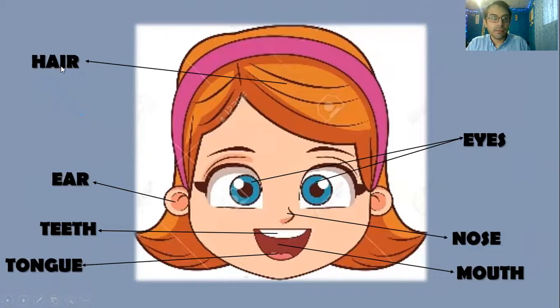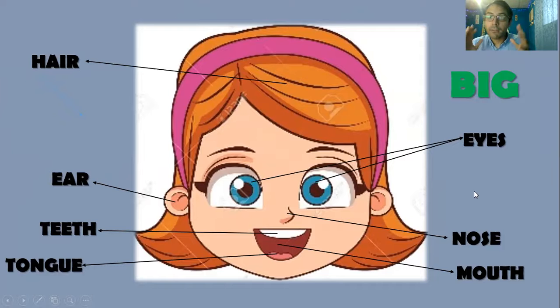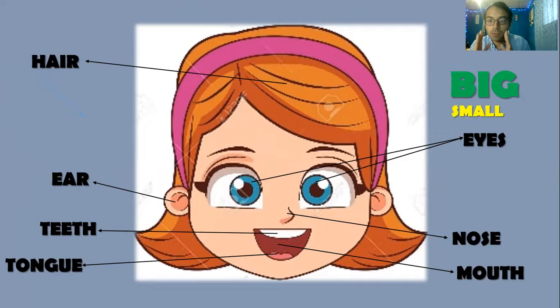Entonces acuérdense, las partes del cuerpo son: the hair, el cabello; the eyes, los ojos; the ear or ears; the nose; the teeth; the tongue; and the mouth, la boca. Esas serían todas las partes. Y recuerden, podemos describirlos diciendo que son big, grandes, o small, pequeños. Primero decimos el tamaño y después la parte del cuerpo. Lo mismo con los colores. Y eso sería todo por la clase de hoy. Si tienen alguna duda, me pueden contactar al privado. Espero que pasen un buen fin de semana. Bye.